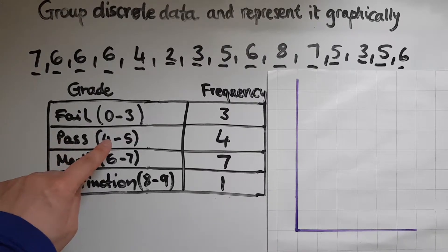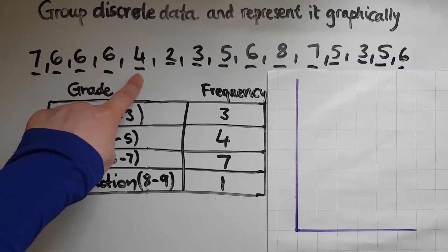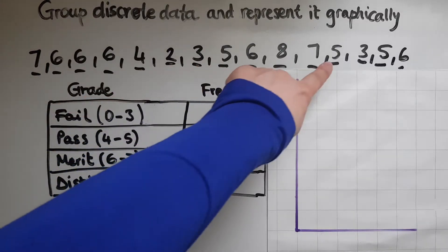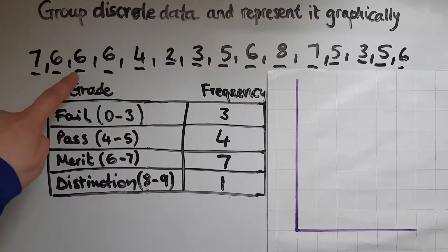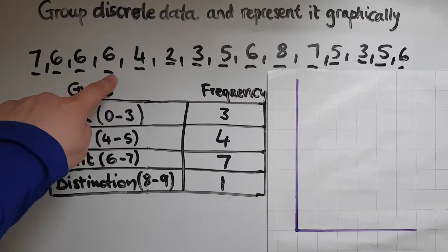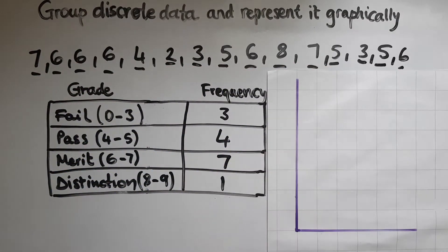And pass is either 4 or 5. So I counted 1, 2, 3, 4, 5, 6, 7. So 7 in total.